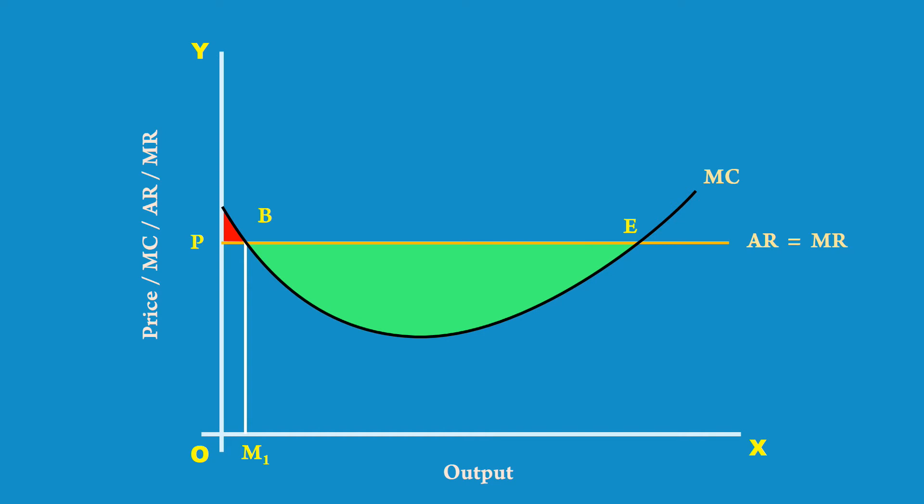Examine marginal cost. It is increasing. The second condition of the producer's equilibrium is also satisfied. Hence, at point E, the producer is in equilibrium.